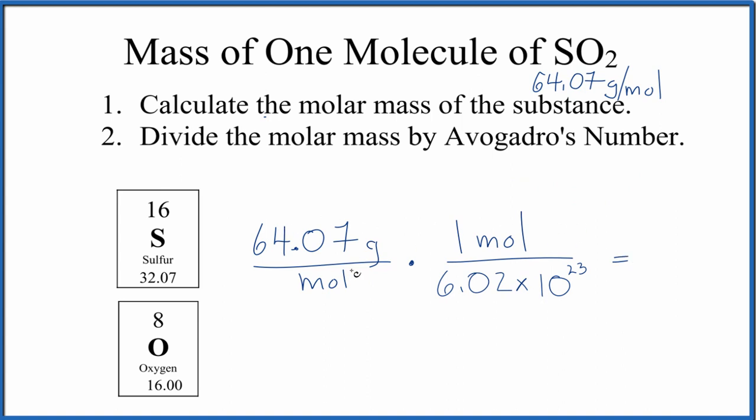When we multiply, we have moles on the bottom and the top. They're going to cancel out. We'll be left with grams, so we know we've done this correctly. Really all we're doing is dividing 64.07 by Avogadro's number. Let's just make sure the units cancel out.